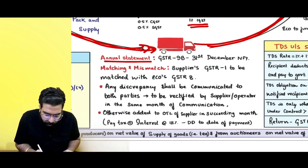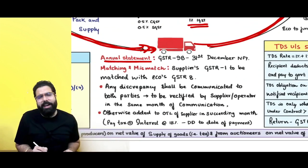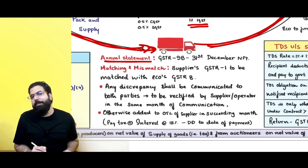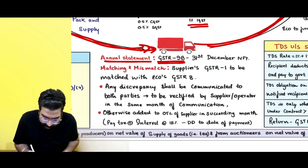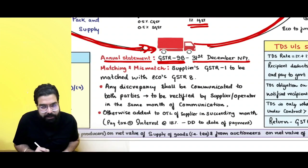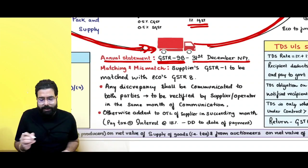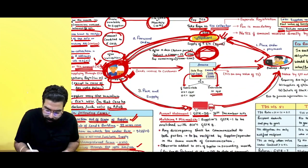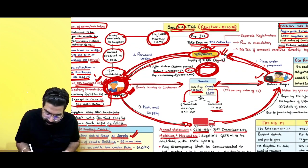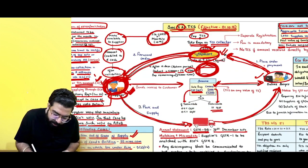The annual statement to be filed by a TCS collector is GSTR-9B, by 31st December of the next financial year. Now, matching and mismatching: if Flipkart showed in his GSTR-8 that Ramesh has supplied for 1 lakh rupees, but in your GSTR-1 outward supply you showed only 50,000 rupees — there is a mismatch.